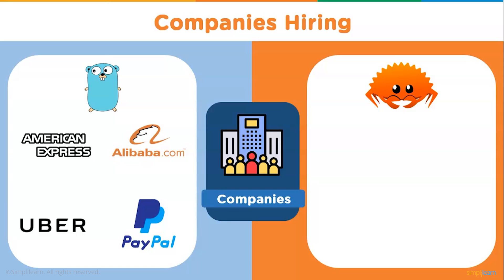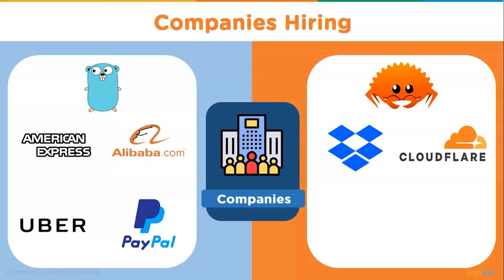Now let's see some companies using Rust. First is Dropbox, a file hosting service that uses Rust for parts of its file synchronization engine. Since the engine is highly concurrent, they chose Rust over any other language. Cloudflare, an American web infrastructure and website security company, uses Rust as a core language and replaced C with Rust for its memory safety features. Figma, a collaborative web-based design tool for vector graphics and interface prototyping, chose Rust to rewrite their multiplayer synchronization engine due to their rapid growth.